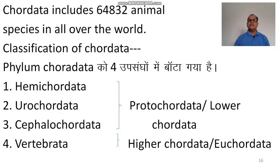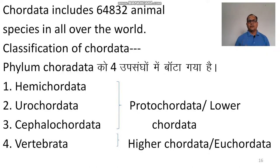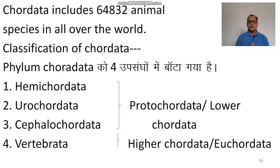Phylum Chordata is divided into four subphyla: Hemichordata, Urochordata, Cephalochordata, and Vertebrata. The first three subphyla — Hemichordata, Urochordata, and Cephalochordata — are also called protochordates or lower chordates because these are less developed chordates. Vertebrata is called higher developed chordates, or eucordates, or craniates, because the cranium is developed in these animals.